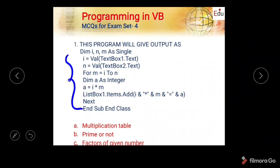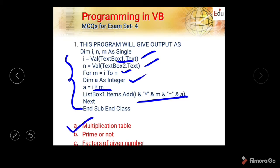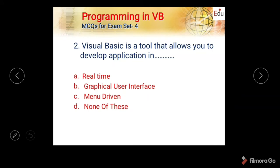The first question shows a program where two text boxes are declared, then a for loop is used, declaring a variable as integer with condition A equals I multiplied by M. I is a value from text box 1 and M is a parameter passed for multiplication. The options are: multiplication table, prime or not, and factorial of a given number. Since prime and factorial conditions are not specified, this program is designed for the multiplication table.